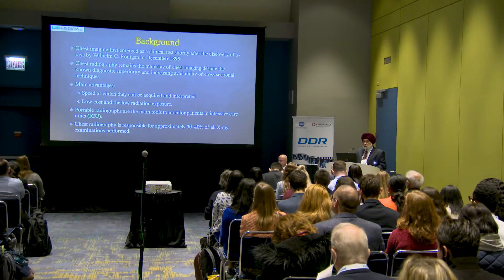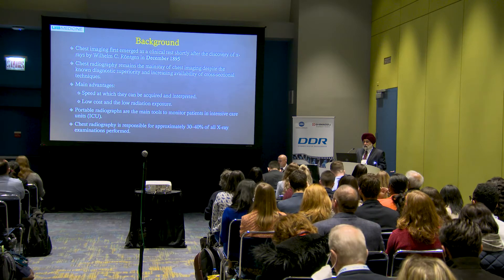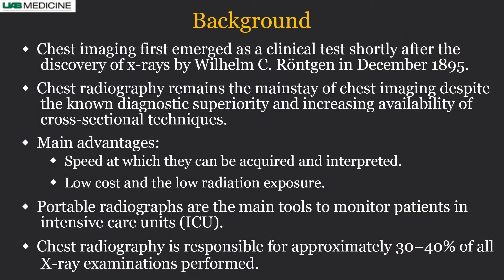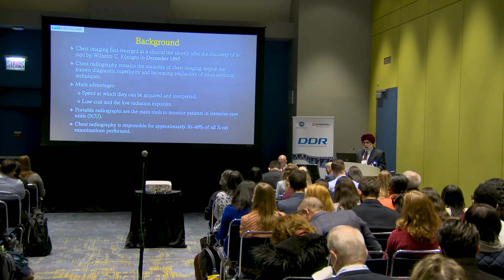As a background, X-rays were discovered in December of 1895, and immediately after that, chest imaging was the first thing people started looking at — looking at tuberculosis, spots on the dark gray images. Since then, chest radiography has improved and still remains the mainstay of chest imaging despite significant advances in cross-sectional imaging. Its main advantage is the speed at which we can acquire and interpret it, and it is low cost with low radiation exposure.